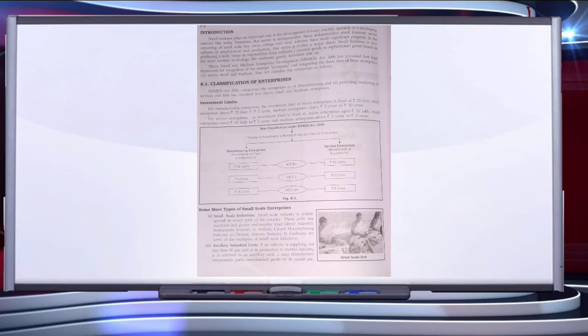Ancillary industry units are also there. If an industry is supplying not less than 50% of its production to another unit, it is referred to as an ancillary unit. It may manufacture components, parts, or semi-finished goods for its parent unit.